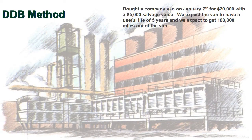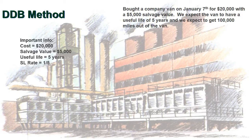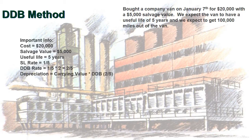The next method is the double declining balance method, which is more realistic in that it puts more depreciation at the front of the asset's life rather than giving the same amount every period. Using the same example: cost is $20,000, salvage value is $5,000 — though note we don't calculate a depreciable cost upfront. Useful life is five years, so the straight-line rate is 1/5. For double declining balance, we multiply 1/5 by 2, giving us a rate of 2/5 (40%). Each year, we multiply the current carrying value by 2/5 to get depreciation.